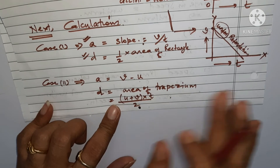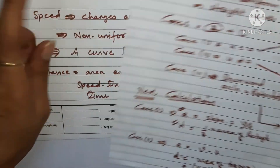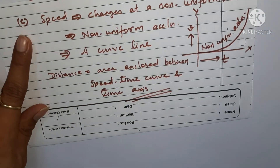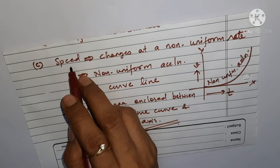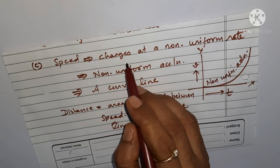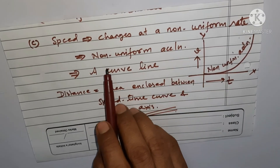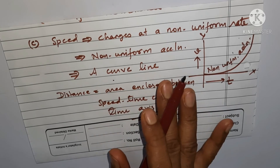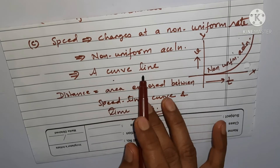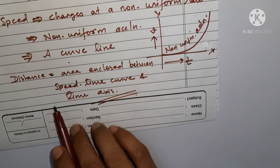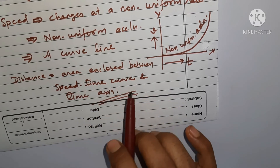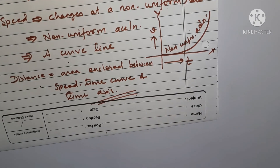Case C is the third case of the speed-time graph. In this case, speed changes in a non-uniform way, giving non-uniform acceleration. Instead of a straight line, we get a curve. The distance in this case is also found from the area enclosed between the speed-time curve and the time axis.